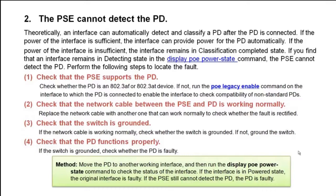Perform the following steps to locate the fault. 1. Check that the PSE supports the PD. Check whether the PD is an 802.3AF or 802.3AT device. If it is neither, run the PoE legacy enable command on the interface the PD is connected to, to enable the interface to check compatibility of non-standard PDs. 2. Check that the network cable between the PSE and PD is working normally. Replace the network cable with another one that is known to work properly to check whether the fault is rectified.